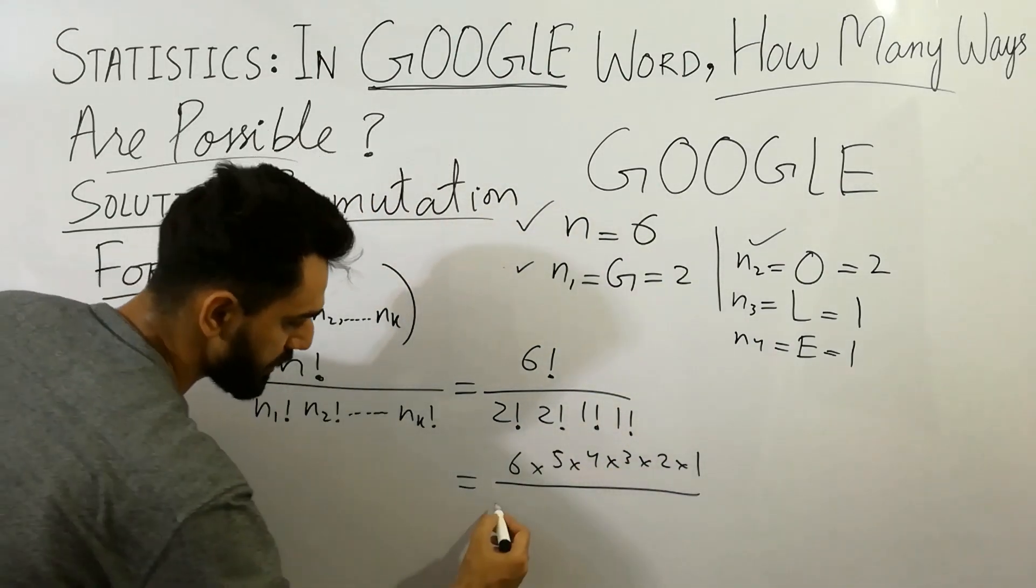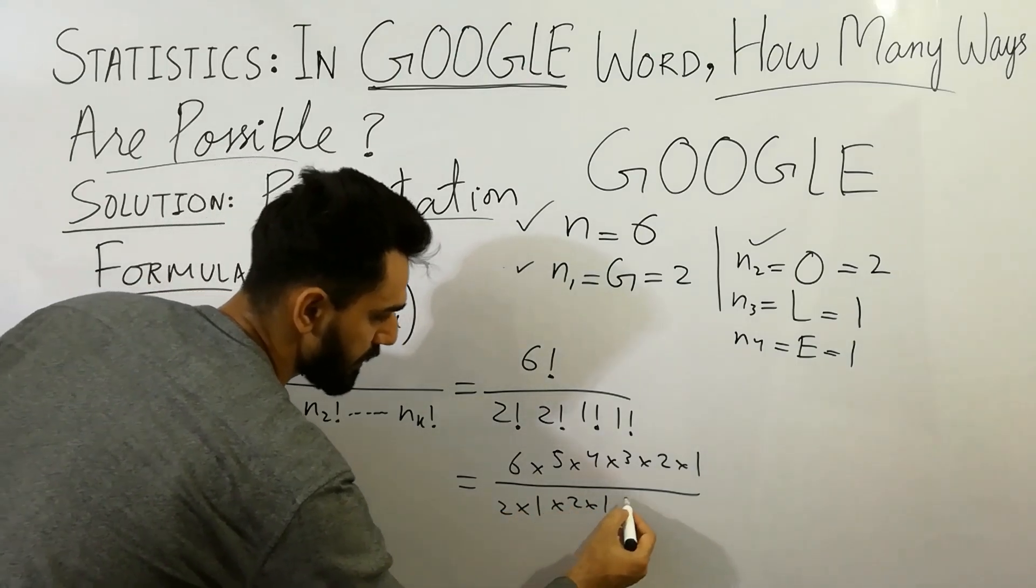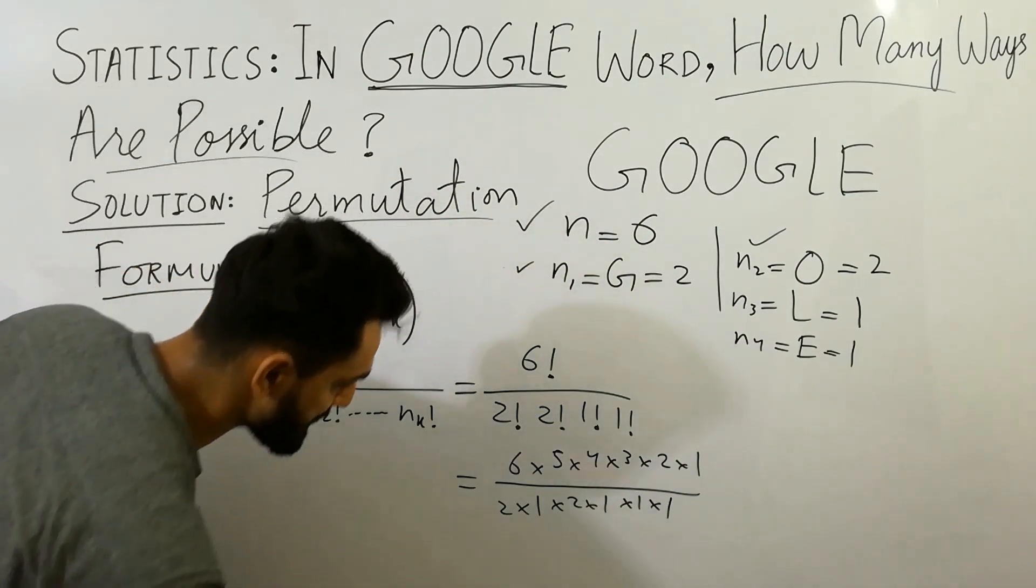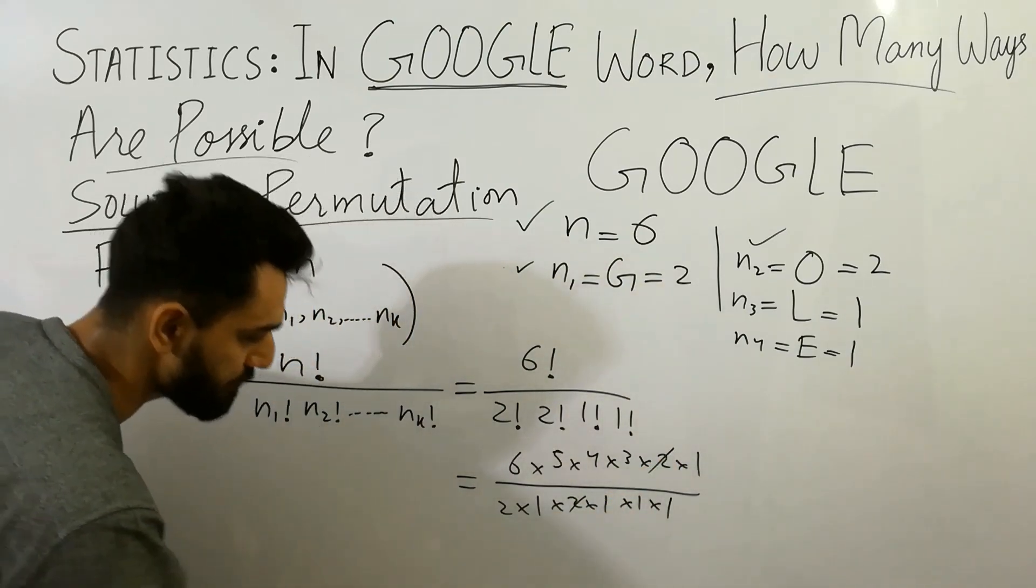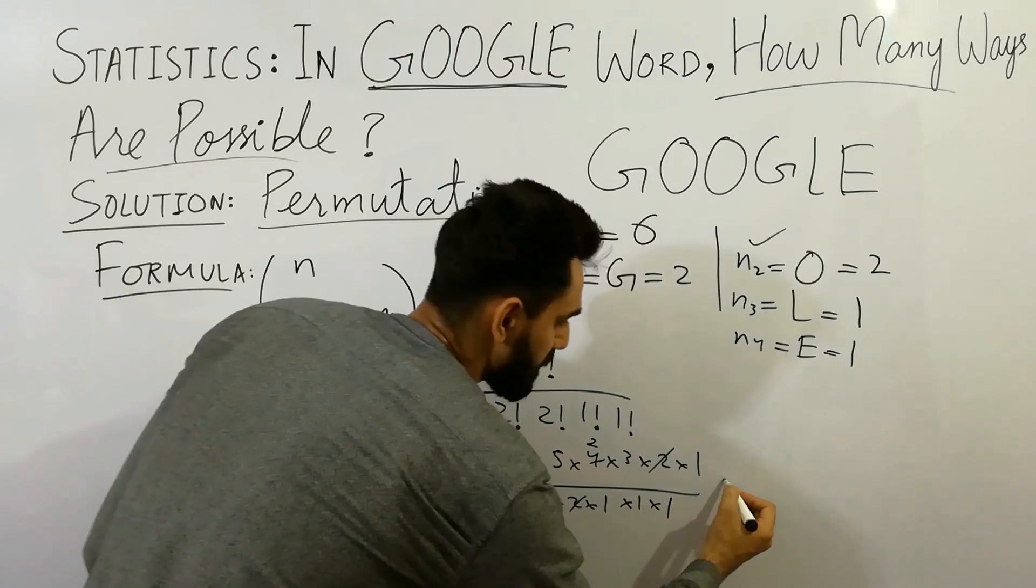Next we get here 2 factorial will be 2 multiplied by 1, 2 multiplied by 1, 1 multiplied by 1. That's it. Next step will be here. Very simply, here 2 will be cancelled out, 2 will be cancelled out. Next step, 2 times 2 is 4.